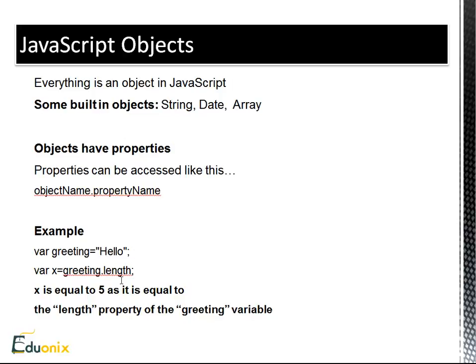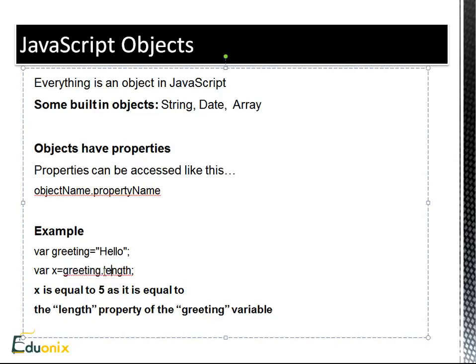We're using a variable, which is a string. Hello. And this is an object. This variable greeting is an object. Now here we're saying variable x. We're creating a new variable, which is equal to greetings length. Now length is a property of the greeting variable, which holds the text Hello. So what this length property is, is the number of characters of the variable or of the text Hello, which is five. So here, x is equal to five. It's equal to the length property of the greeting variable or object.